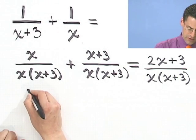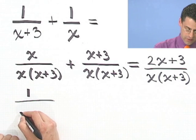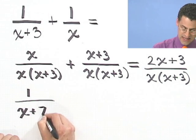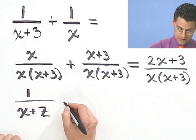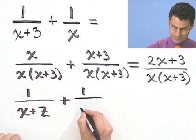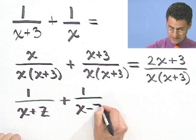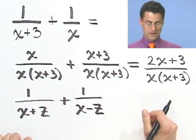How about you try one? How about you give this one a shot? How about 1 over x plus z, introducing now two letters, plus 1 over x minus z? Combine those. First get a common denominator. So stay there. See how you do.